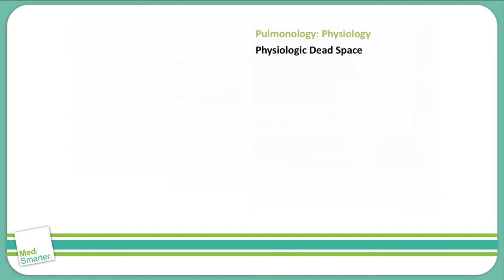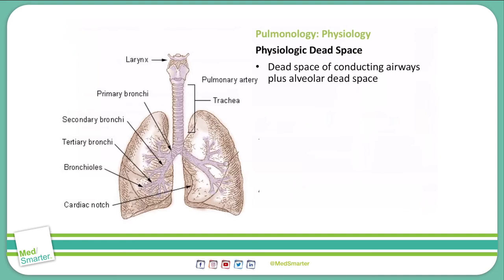As we mentioned, the lungs do have physiologic dead space. Dead space is portions of the airway that do not participate in gas exchange, and the air in that dead space cannot be expired from the respiratory tract. Our physiologic dead space equals the dead space of conducting airways plus our alveolar dead space. As seen in this picture, our physiologic dead space is everything that does not participate in gas exchange.